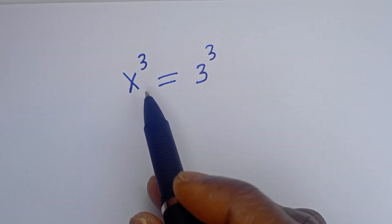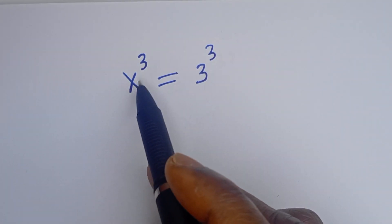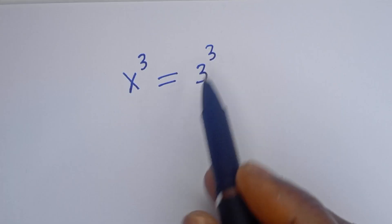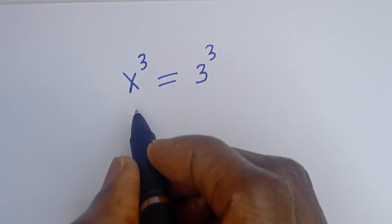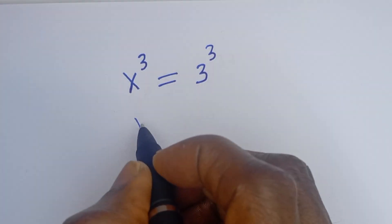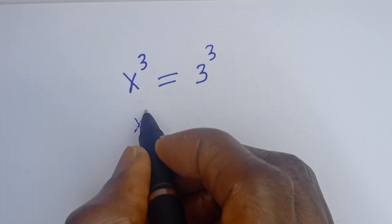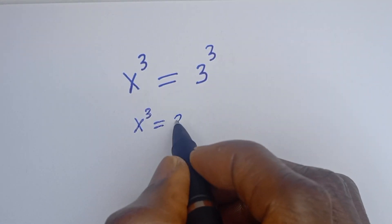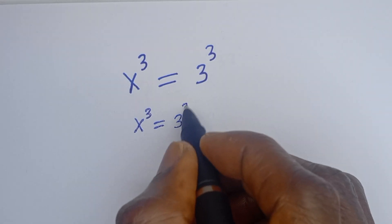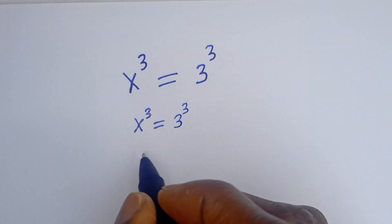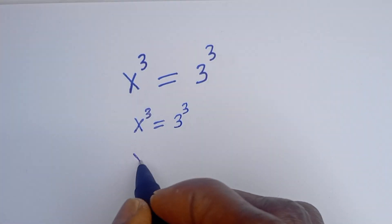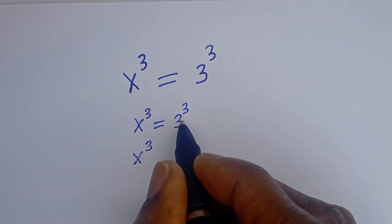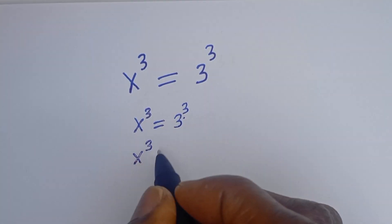Hello. How to solve for s in this equation: s cubed is equal to 3 cubed. Here we have s cubed is equal to 3 cubed. This can be written as s cubed...